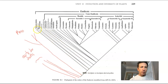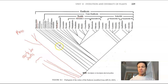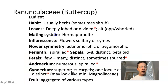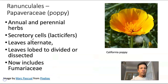Here are the Ranunculales that we are going to start talking about — you can see that's a really early branch. After that, we are going to jump up into the saxifrages and some of the rosids. Ranunculaceae — this is a quick review from last week. They include buttercups, and some features we emphasized were having many stamens and many distinct carpels.